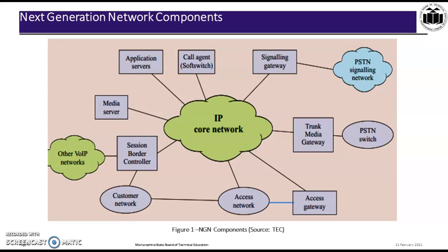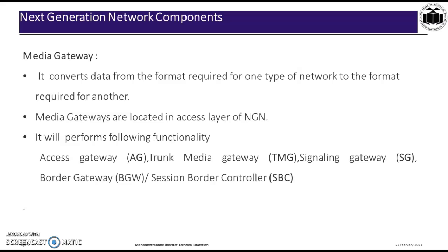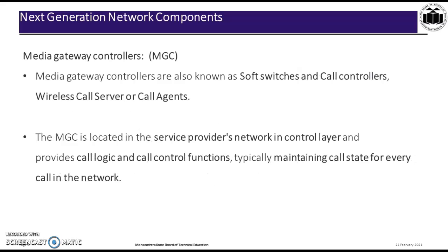The Media Gateway converts data from the format required for one type of network to the format required for another. Media gateways are located in the access layer network. As discussed previously, there are four layers in NGN: access, transport, control, and service layer. The Media Gateway performs the following functionality: Access Gateway, Media Gateway, Signaling Gateway, and Border Gateway.